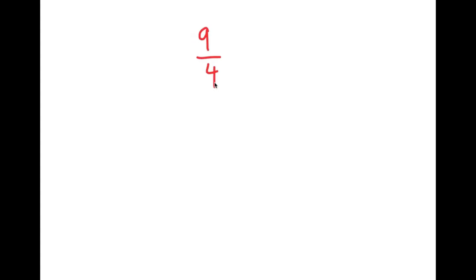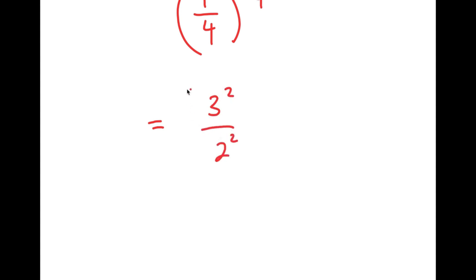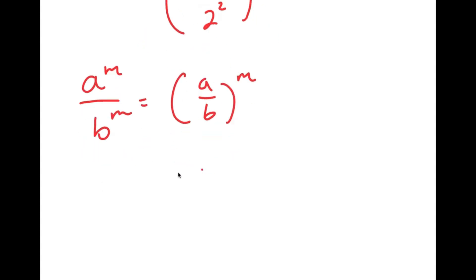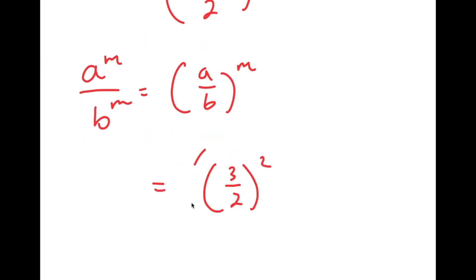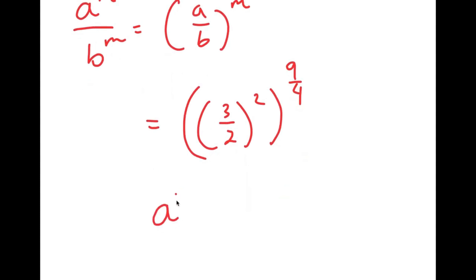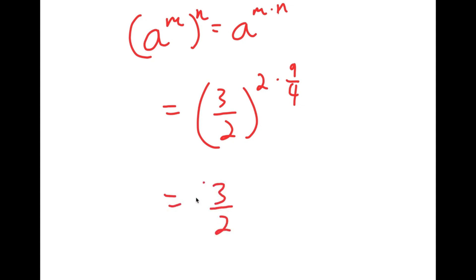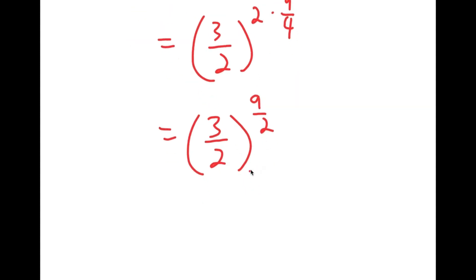In this video I'm going to solve the problem 9 over 4 to the power of 9 over 4. I'm going to first rewrite this as 3 squared over 2 squared to the power of 9 over 4. Using the property a to the power of m over b to the power of m equals a over b to the power of m, I get 3 over 2 squared to the power of 9 over 4. Then using a to the power of m to the power of n equals a to the power of m times n, I get 3 over 2 to the power of 2 times 9 over 4, which equals 3 over 2 to the power of 18 over 4, which simplifies to 3 over 2 to the power of 9 over 2.